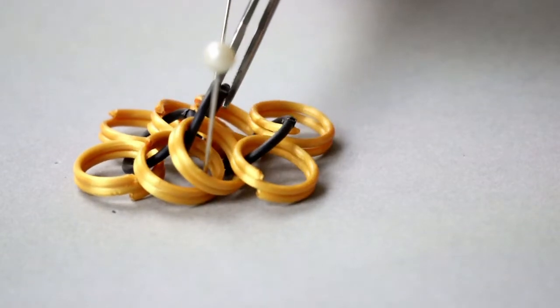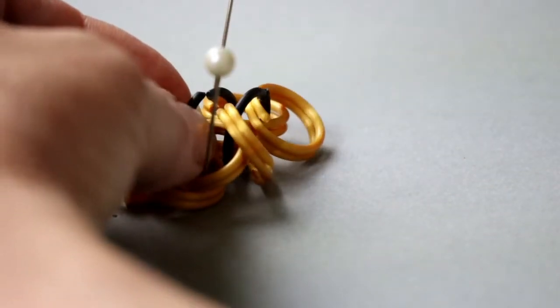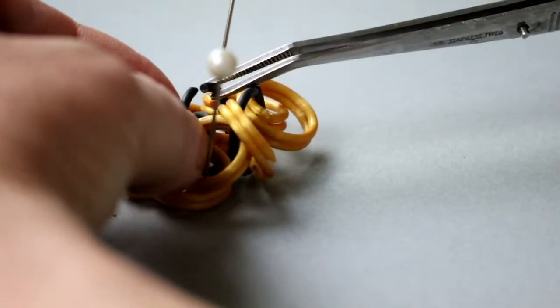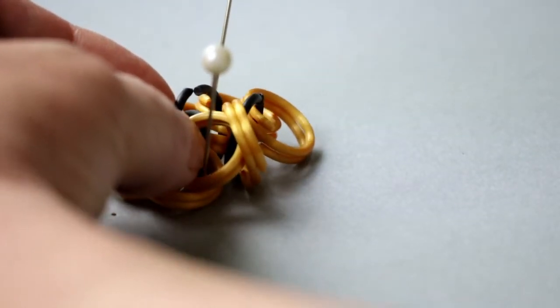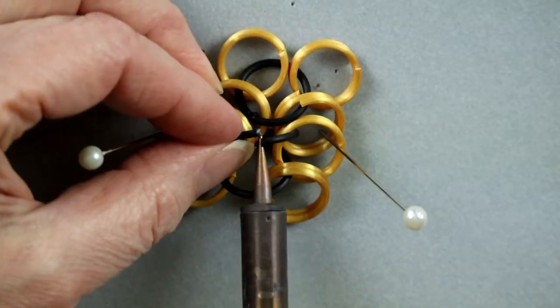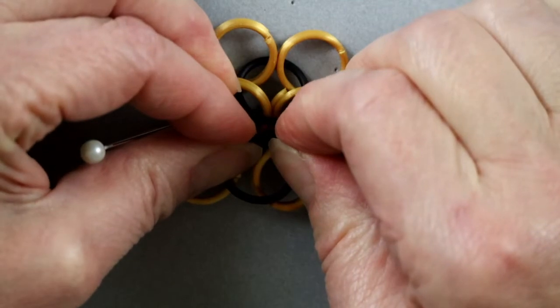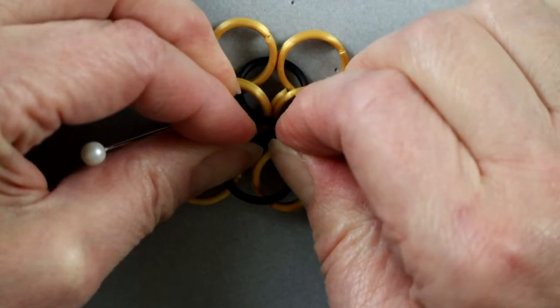Here is the side view again so you can see the angles. Now it's time to butt up the new ring and seal it. Seal, hold till it cools. And you have just joined 2 4 in 1 units.